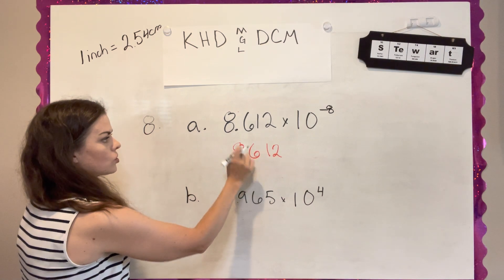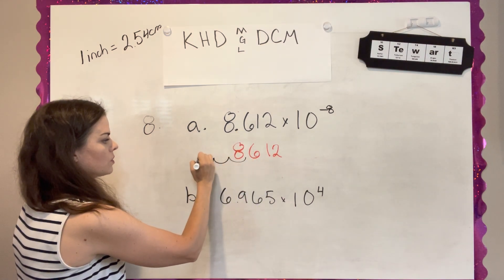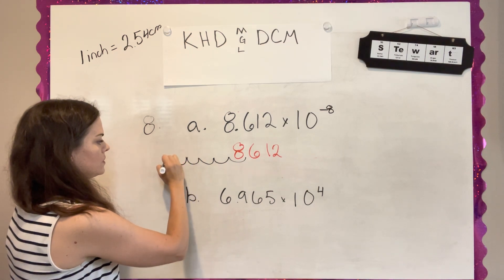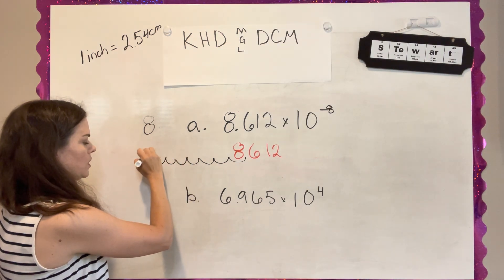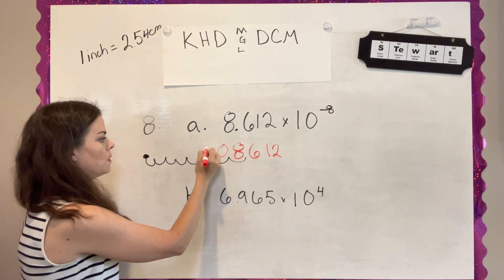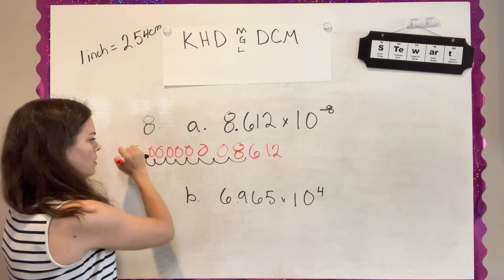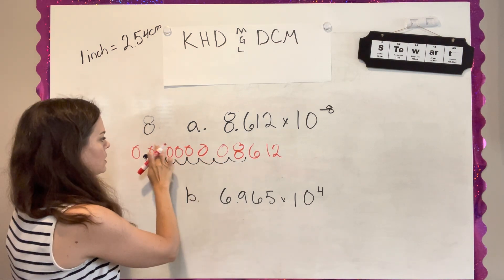So I'm going to have like a decimal and a really small number after it. So I'm going to move it eight times this way. So if it's here, it started off here. It's like 1, 2, 3, 4, 5, 6, 7, 8. And I put my new decimal. And then I'm just going to fill in with zeros.